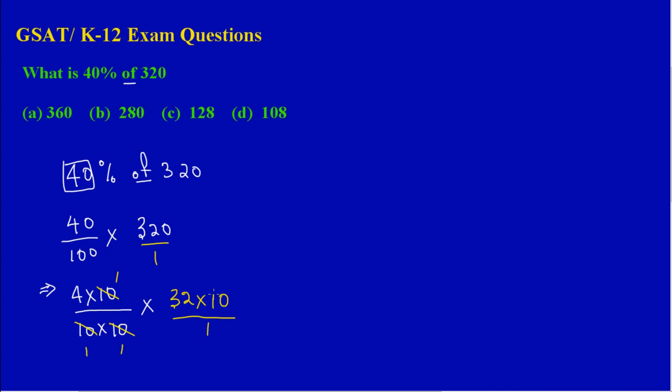So what I have left is 4 times 32. After cancellation, we have 4 multiplying 32 up top. 4 times 32 is basically 128.